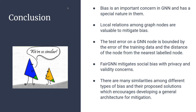In conclusion: bias is an important concern in GNNs with a special nature due to graph structure. Local relations among graph nodes are valuable for mitigating bias. The test error on a GNN is bounded by the training error plus a term related to the distance from the nearest labeled node in a semi-supervised setting. FairGNN mitigates social bias but has privacy and validity concerns. There are many similarities among different types of bias and their solutions, encouraging development of a general mitigation architecture.